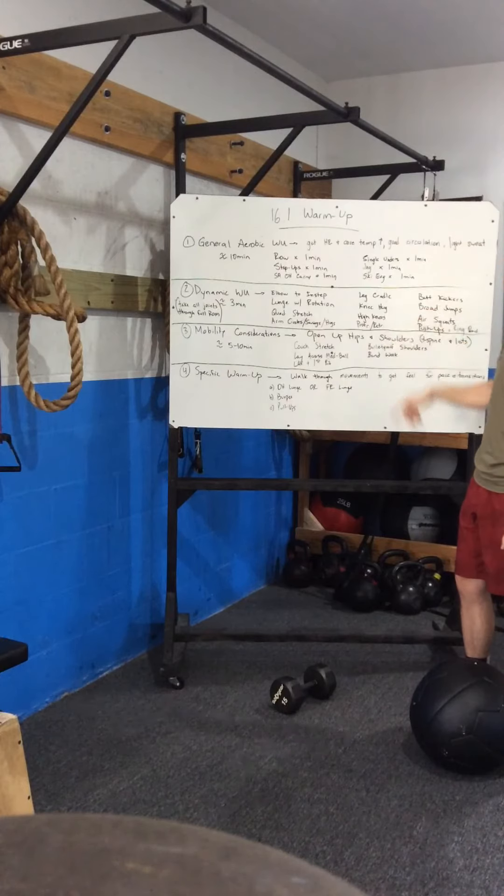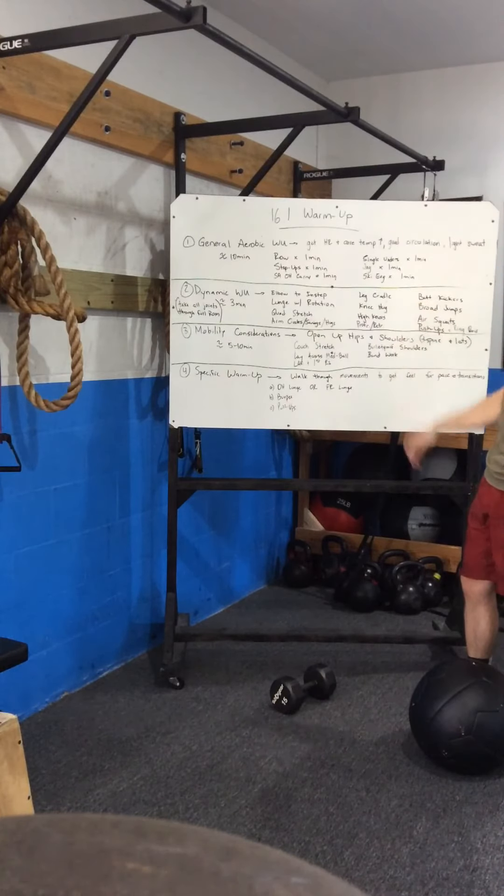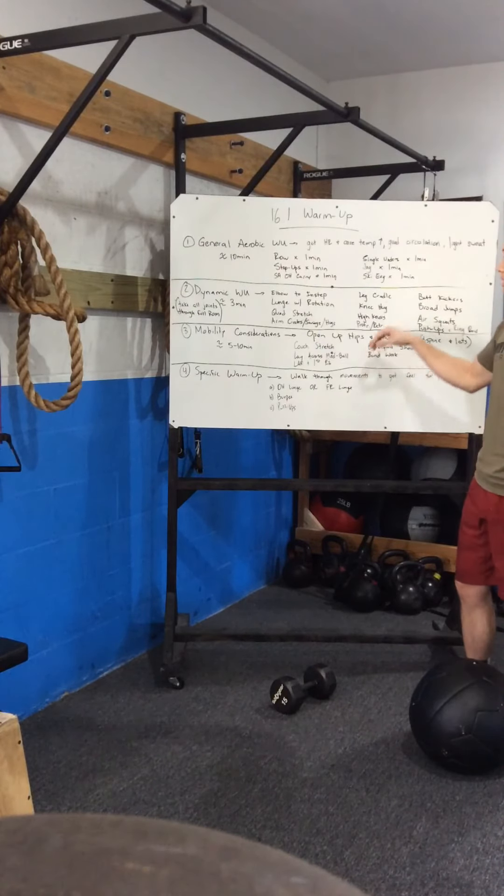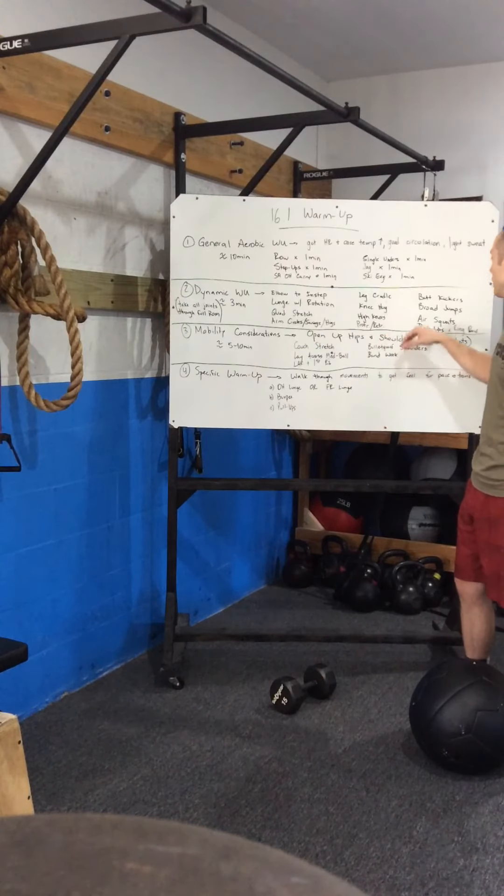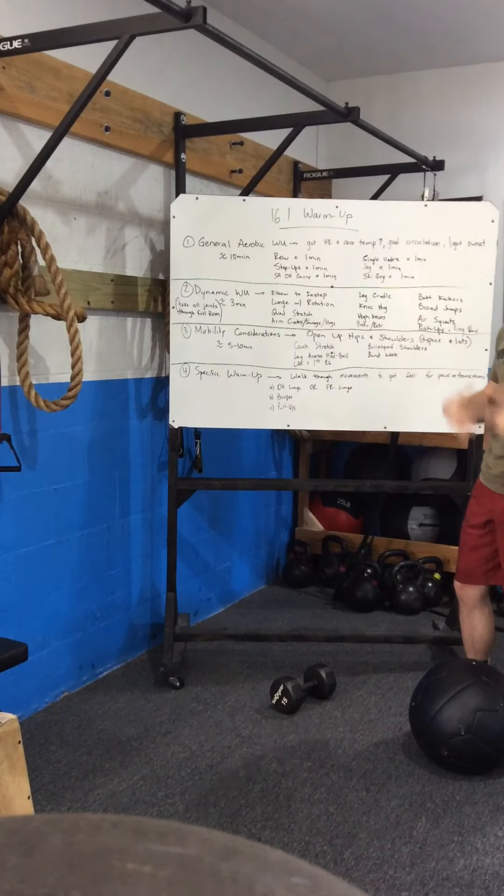Get into some arm circles, arm swings, arm hugs, leg cradle, knee hug. And then you'll notice we're going to get a little bit more dynamic here: high knees, butt kickers, broad jumps. Make sure we're going to throw in some protraction and retraction to get the scaps moving, some air squats, push-ups, and ring rows.